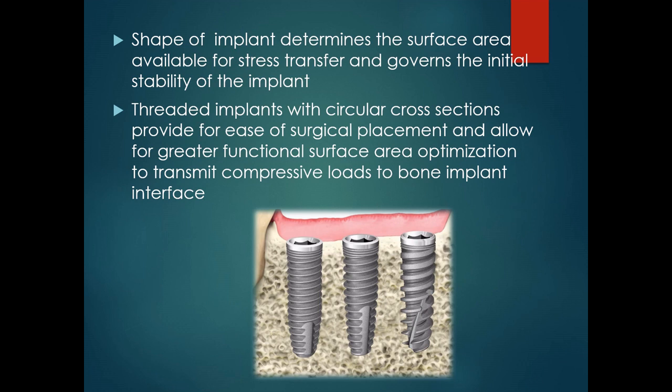The shape of implant or the macro design determines the surface area available for stress transfer and it also governs the initial stability of the implant, and it also has an important bearing on the bone response. The bone grows preferentially on protruding elements of the implant surface like ridges, crest, or edge of the threaded surface.